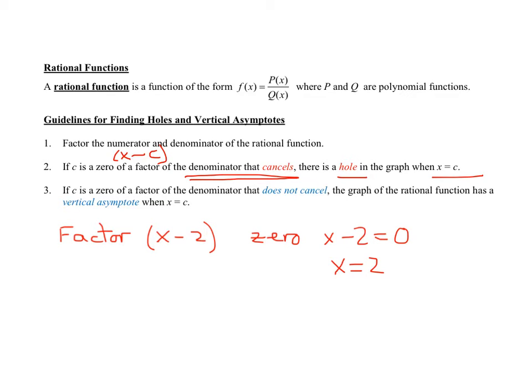However, if you have a factor of x minus c and it does not cancel out of the denominator, then you have a vertical asymptote when x equals c.